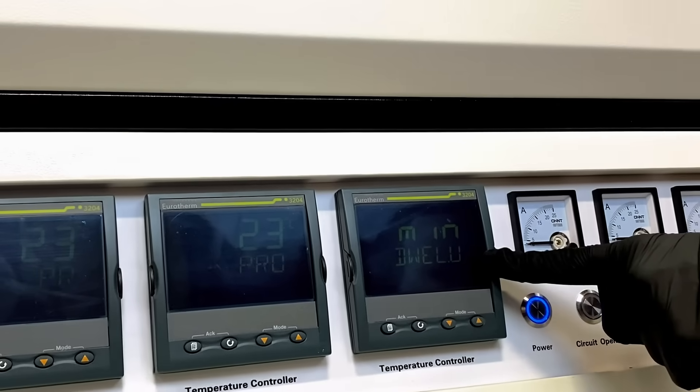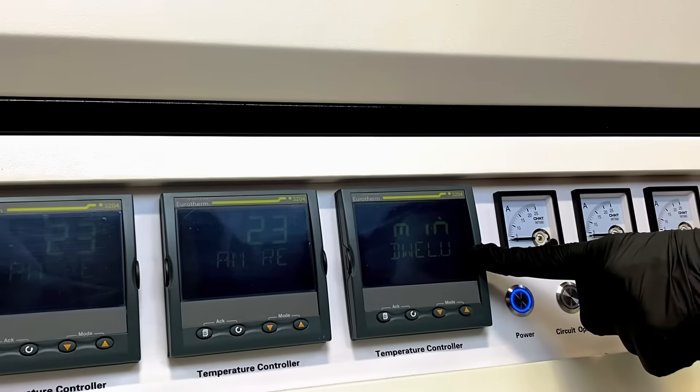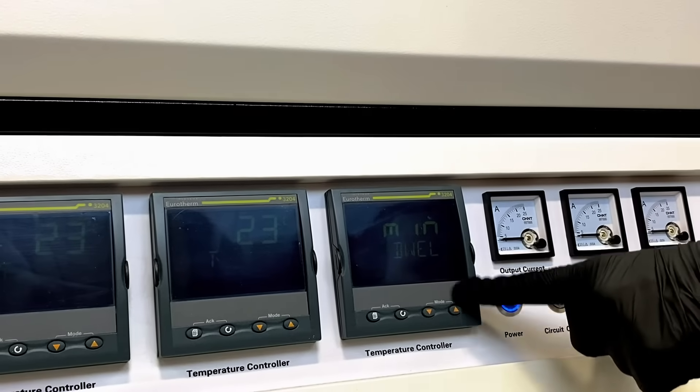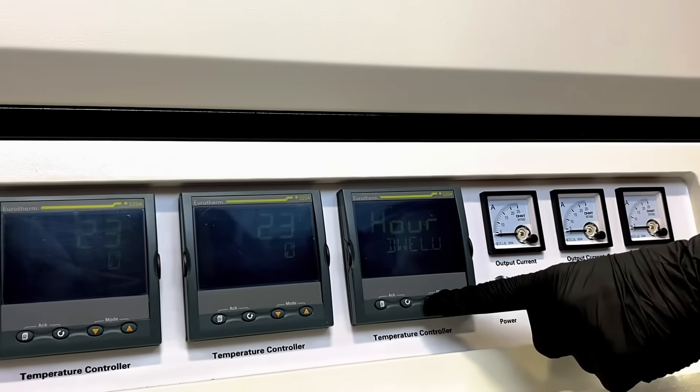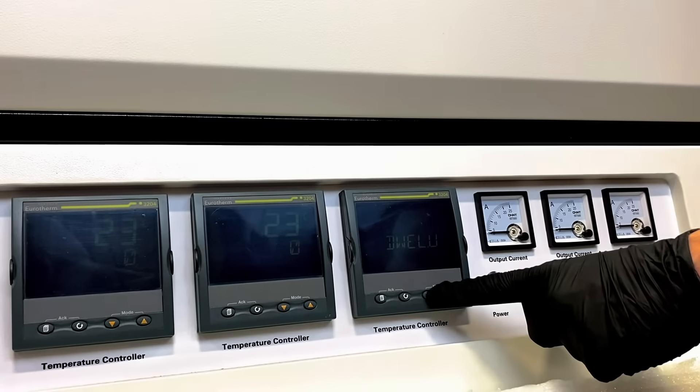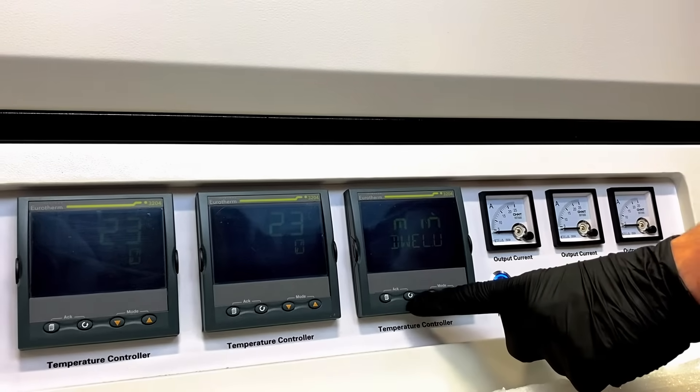Then, we will select the unit of time for our dwell cycle, or the time that our furnace will stay at target temperature. We may again cycle between minutes or hours, but we will select minutes and press the cycle button.